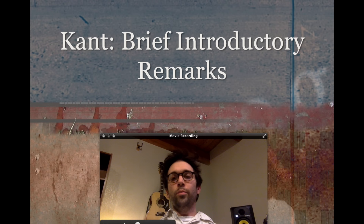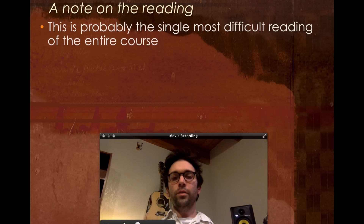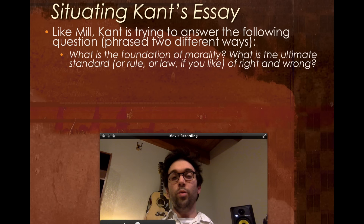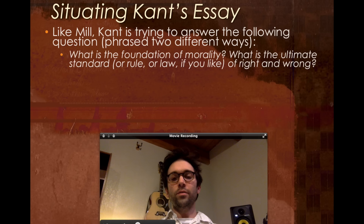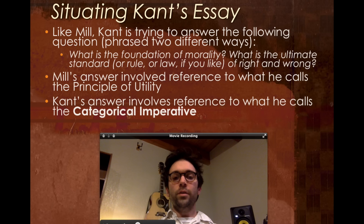What I wanted to start with is just some brief introductory remarks on Kant. This is going to be the most difficult reading of the course. Just a quick reminder that Kant's trying to answer the same kind of question that Mill was. There are two questions, but really they're the same question phrased in two different ways. We can ask: what's the foundation of morality? What that really means is, what's the ultimate standard or rule or law of right and wrong? Is there some principle we can rely on that's going to give us the right answer about what to do anytime we find ourselves in a situation that has some moral dimension to it?